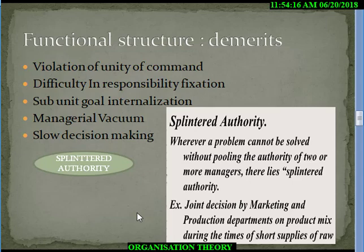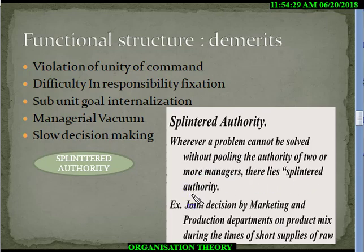There is also something called splintered authority — when orders come from two or more authorities and decisions have to be made by two or more authorities. A problem cannot be solved without pulling the authority of two or more managers.